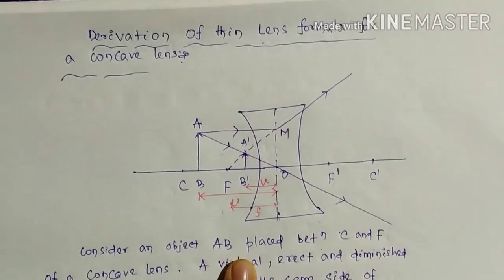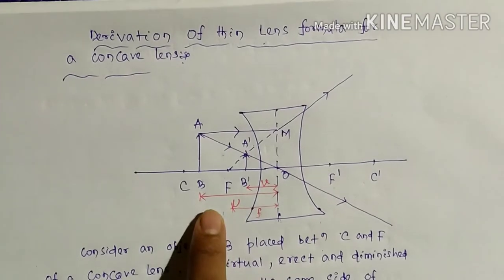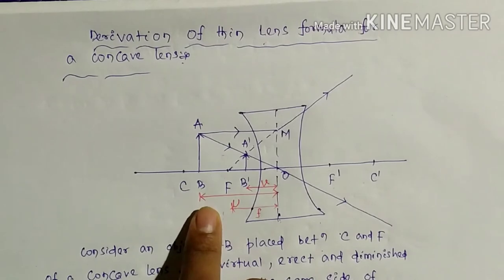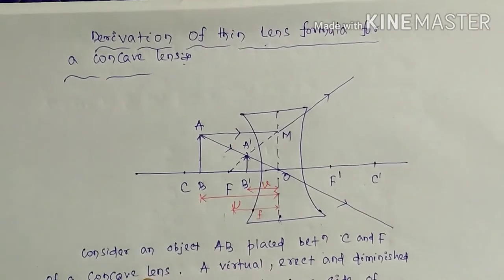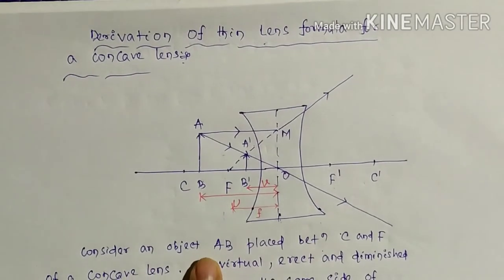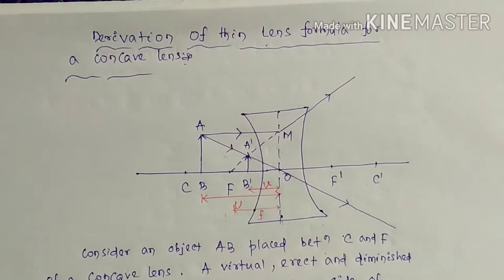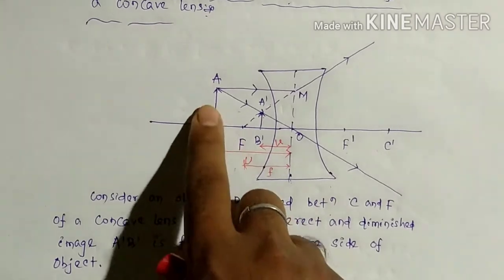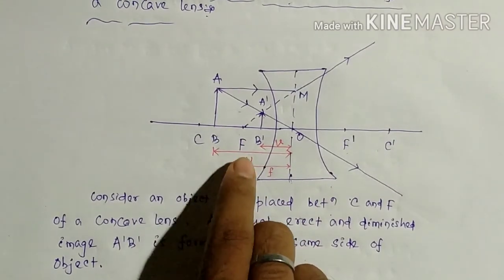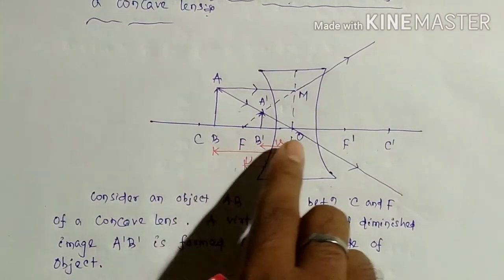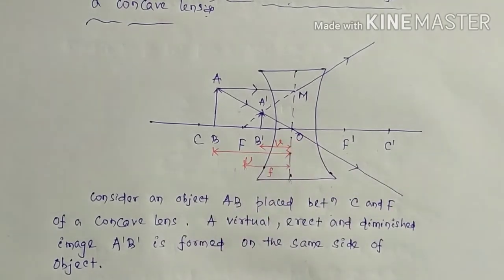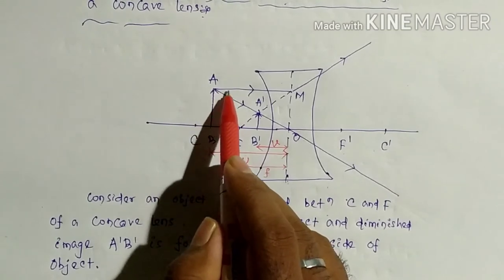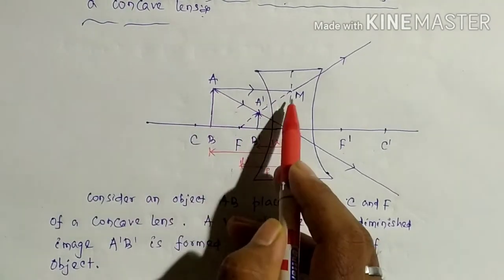Now we will discuss when the object is placed at a finite distance. Consider an object AB placed between C and F of a concave lens. The image is formed between F and O. Now consider a ray drawn parallel to the principal axis.